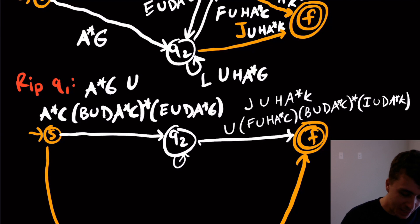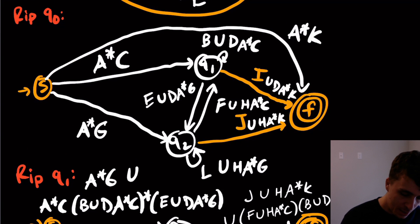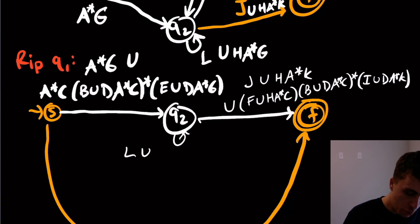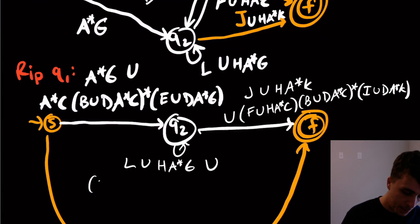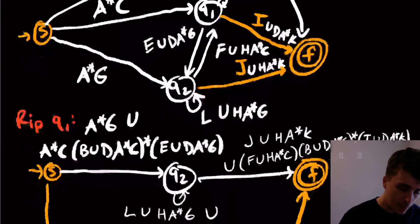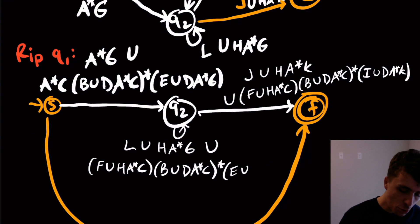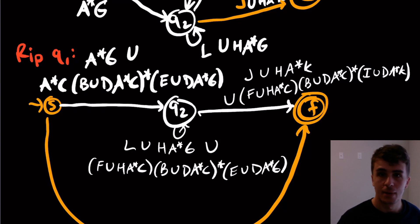Now we get to deal with the inner transition. So that's going to be this guy coming out. What was already there? Unioning with this star this concatenated with this. So that's going to be L union H A star G, union this whole thing. So that's going to be F union H A star C concatenated with B union D A star C whole thing star. And then concatenated with E union D A star G. So simple.